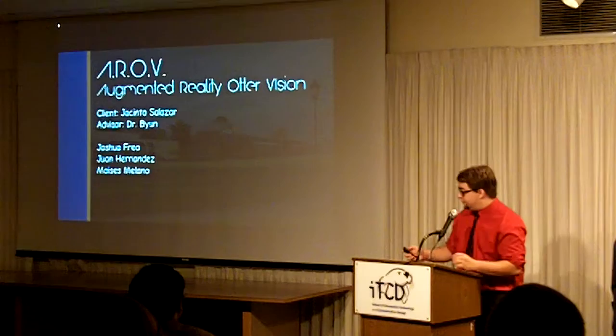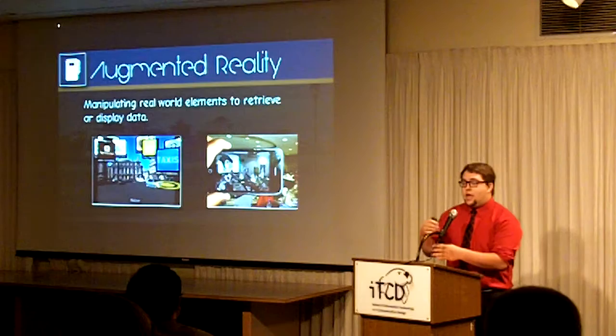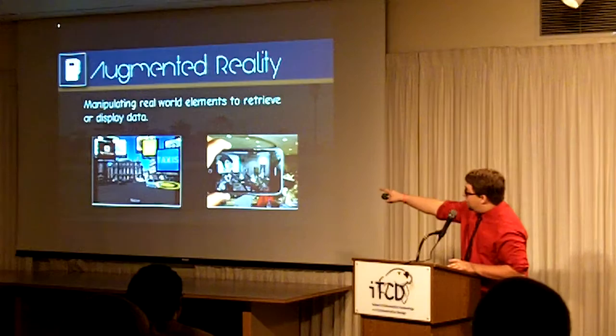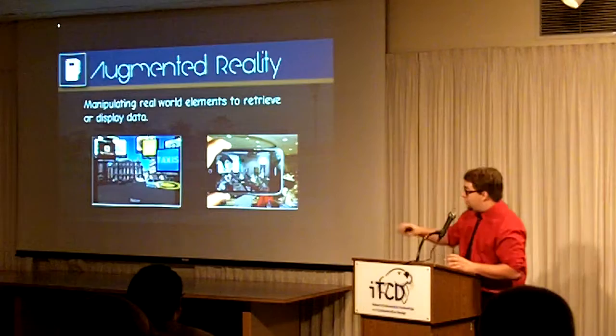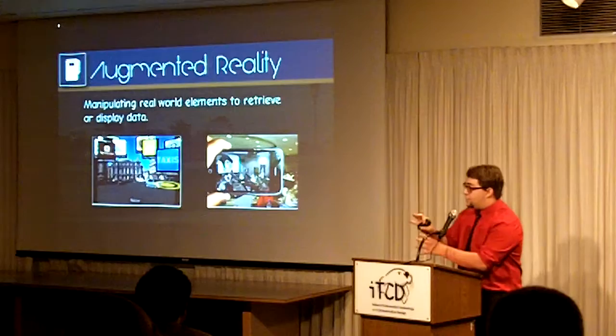A quick overview of what augmented reality is: it's basically just manipulating real-world elements to either post data or pull from it. As you can see in these pictures, the one on the left is getting the user's current location and then posting all these different companies as nodes. And on the one on the right, it's posting all these different funny pictures but taking into account the tables and other variations to post these pictures.